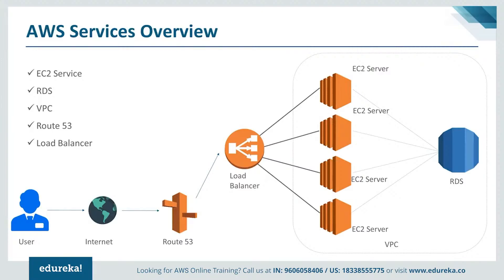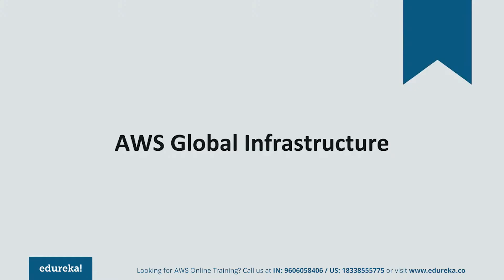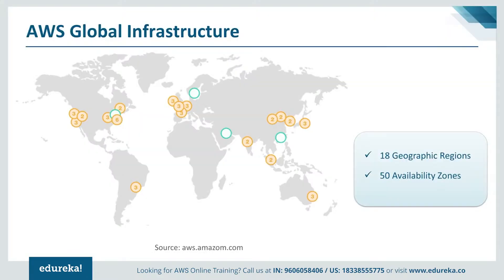Now let's discuss the global infrastructure that AWS has to offer. AWS provides services throughout the globe — it has a global presence. The orange dots you see are the regions that AWS has. Each region has multiple availability zones, and availability zones are nothing but huge data centers with a lot of servers. In all, there are 18 geographical regions around the world, and in those regions there are around 50 availability zones — 50 huge data centers at your disposal.